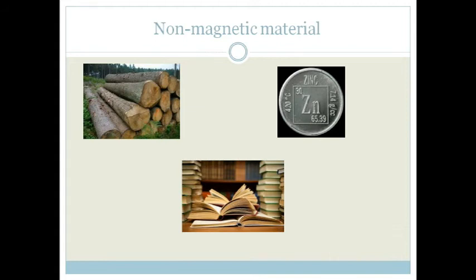Now, non-magnetic materials are, for example, we've got over here our natural materials such as our trees, our wood, we've got paper, and we've got zinc. Now these are all non-magnetic material.